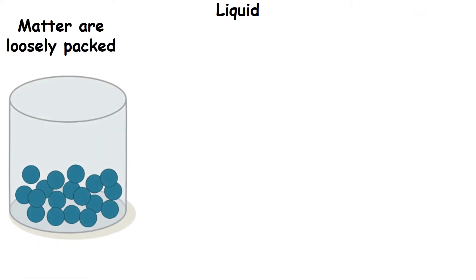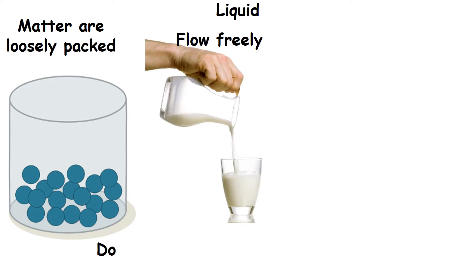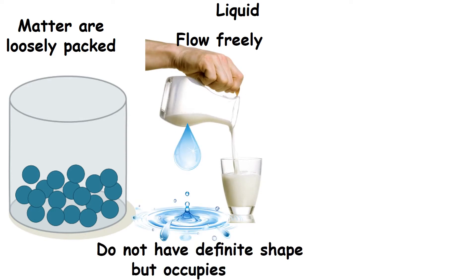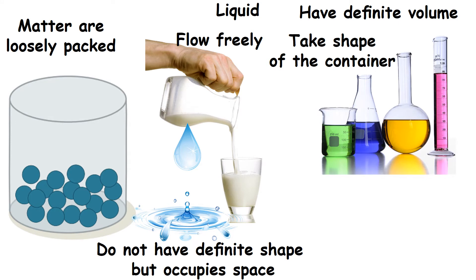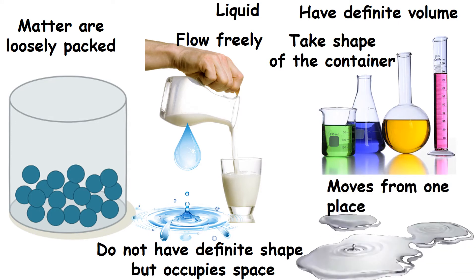Liquids. The matter in liquids are loosely packed. So liquids can flow freely. They do not have a definite shape but occupy space. They have a definite volume. They take the shape of the container in which they are filled. It moves from one place to another.